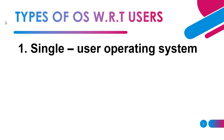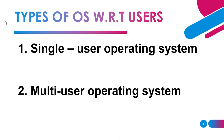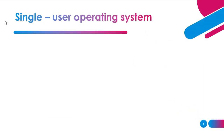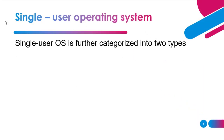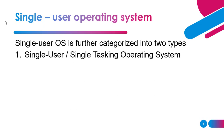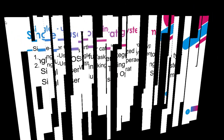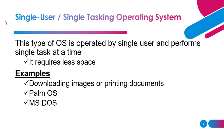With respect to users, there are two types of operating system: single user operating system and multi-user operating system. In single user operating system, these are further categorized into two types: single user single tasking operating system and single user multitasking operating system.